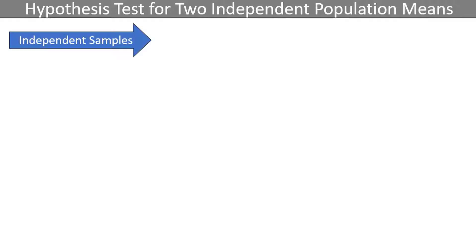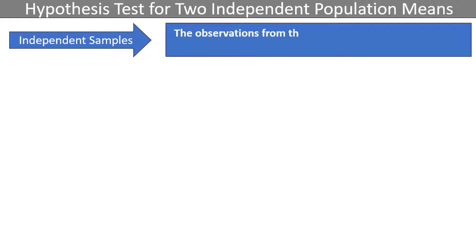By independent, I mean that the observations from the first population have no impact on the observations from the second population. Examples might include data gathered from different schools or from different cities.